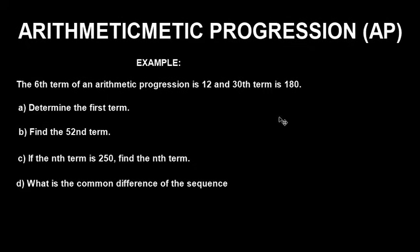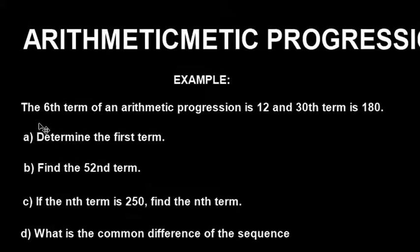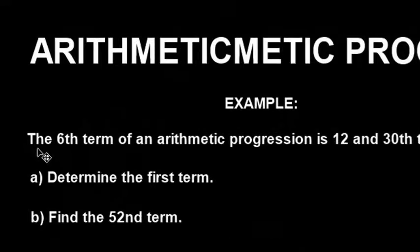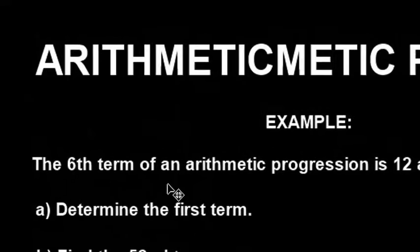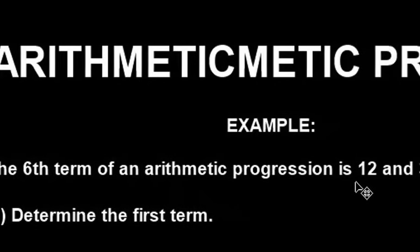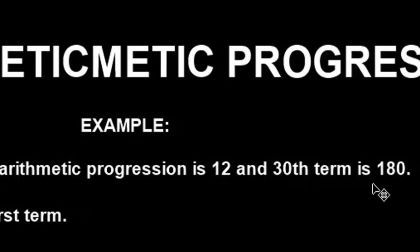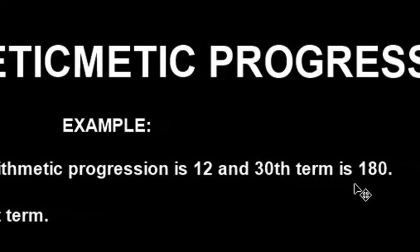So stay with me till the end of this video. Let's begin and look at the example here and solve it together. The example says: the 6th term of an arithmetic progression is 12 and the 30th term is 180.